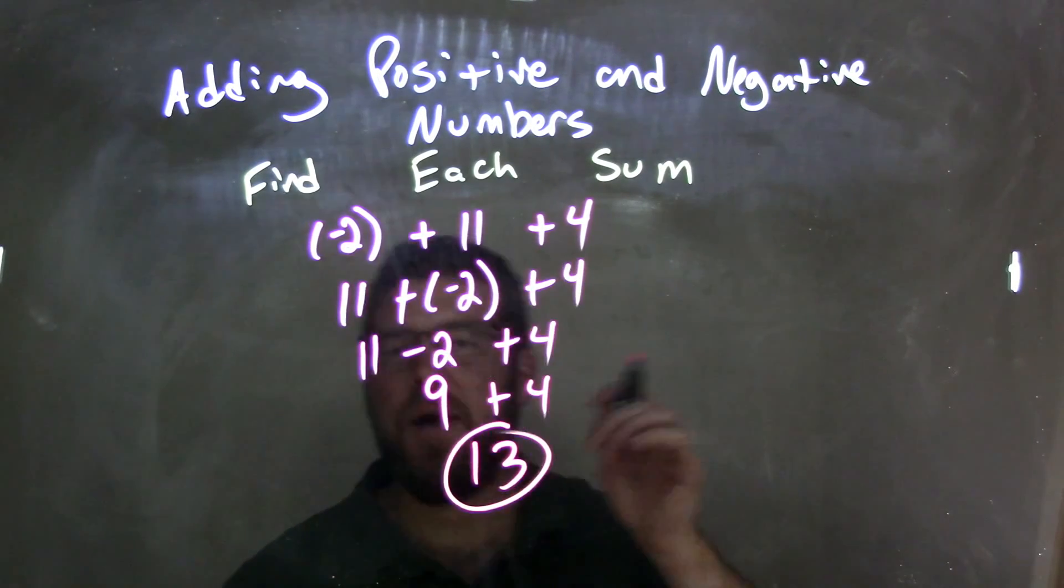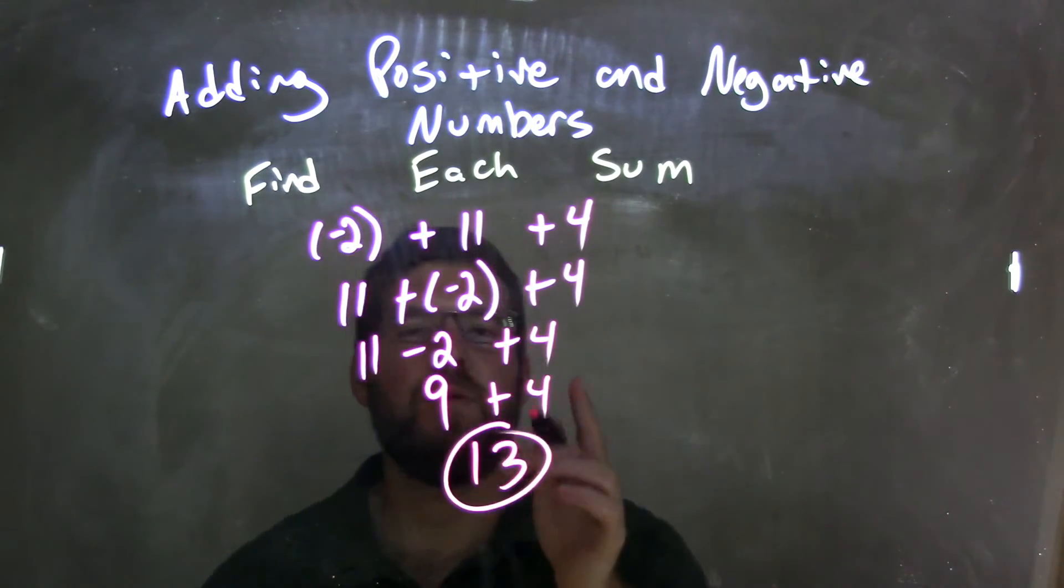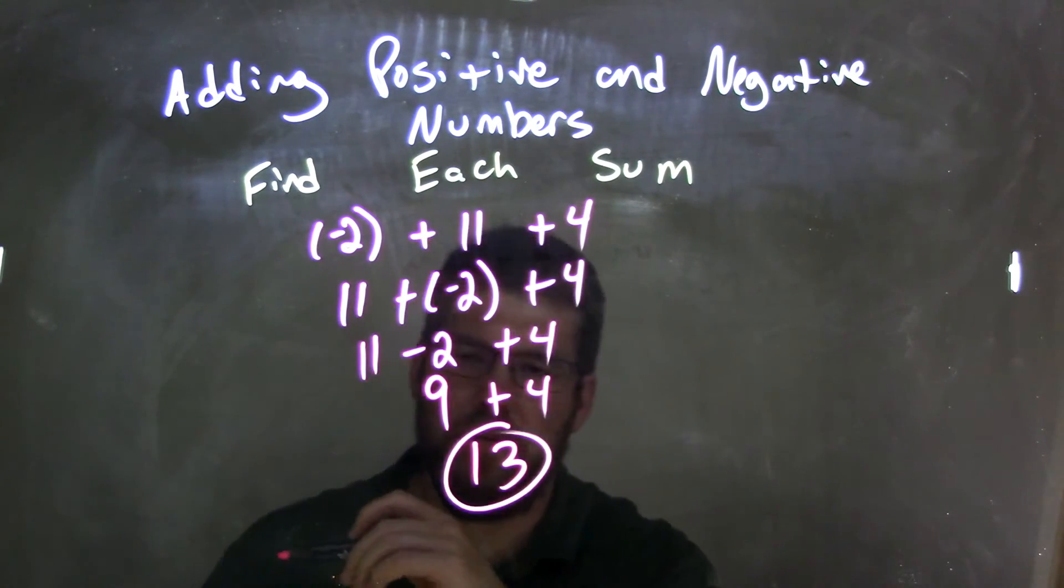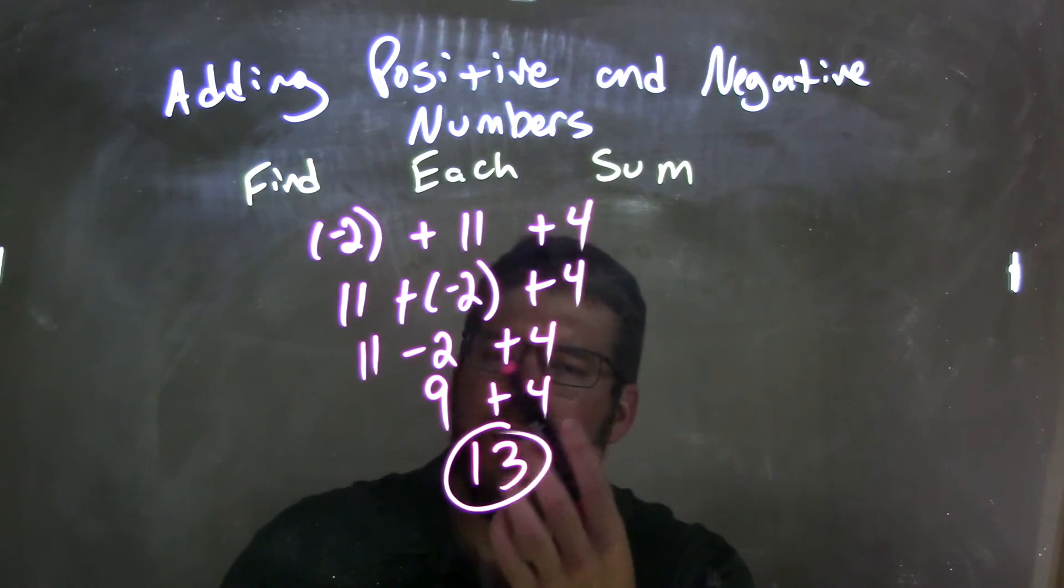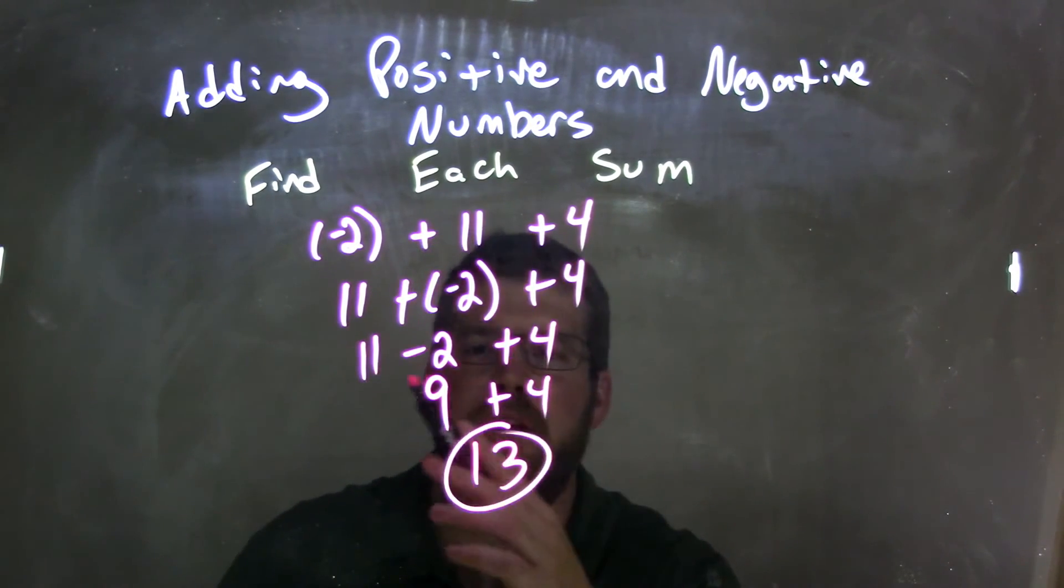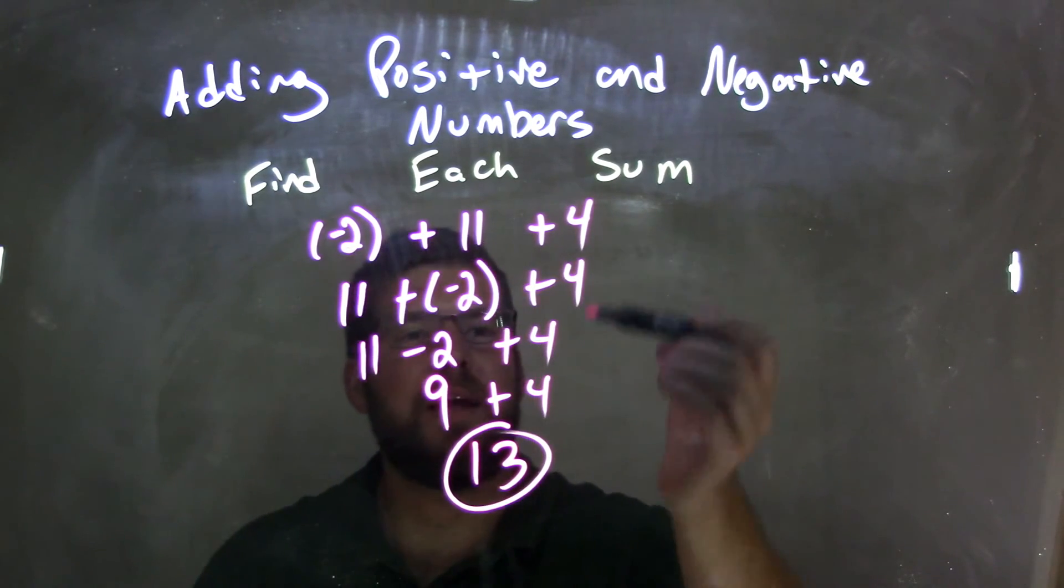So again, let's recap. We had negative 2 plus 11 plus 4. We used the commutative property to switch negative 2 and 11 to be 11 plus a negative 2. And plus a negative is the same thing as subtraction, so we have 11 minus 2. So 11 minus 2 is 9. The whole time, bringing down 4. 9 plus 4 is 13.